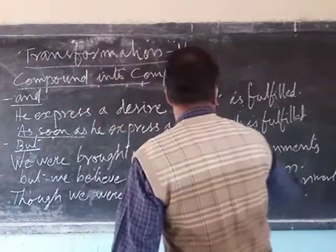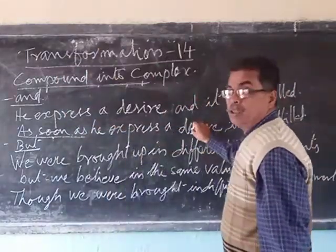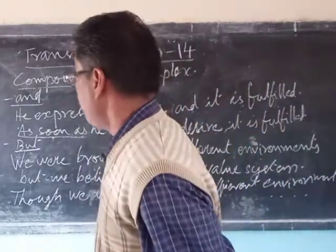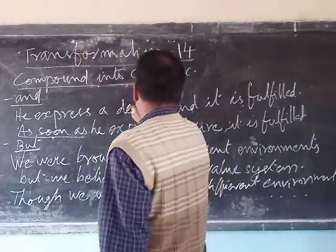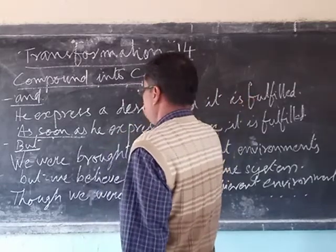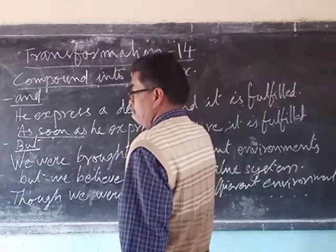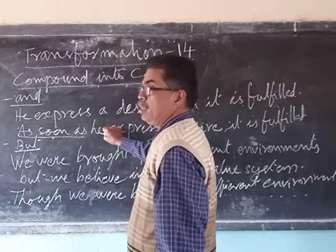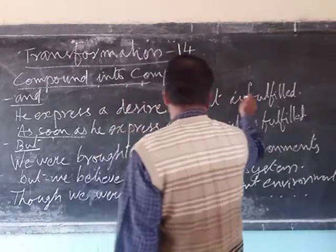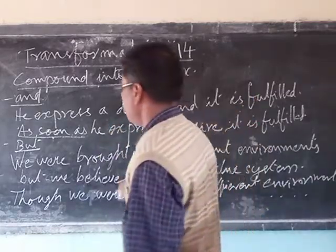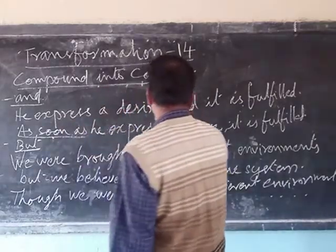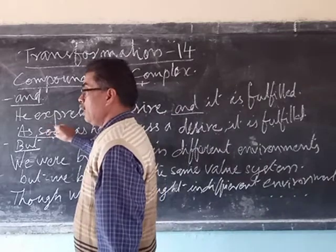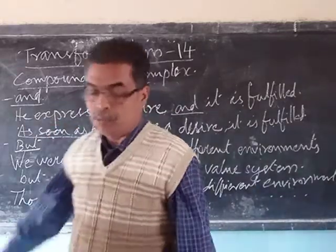So this was a compound sentence, and it has been changed into a complex sentence. Originally there were two coordinate clauses — two independent clauses. Now one has become a subordinate clause, a dependent clause, and the other is retained as it is. The coordinating conjunction 'and' has become the subordinating conjunction 'as soon as'.